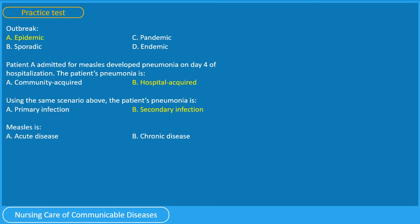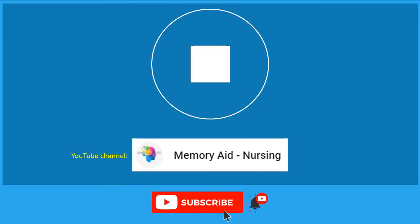For the last question, measles is: A. Acute, B. Chronic. And the answer is A. Acute. If you got four correct answers, good job. This ends this presentation. Please do not forget to subscribe to my YouTube channel, memoryaid-nursing. Thank you.